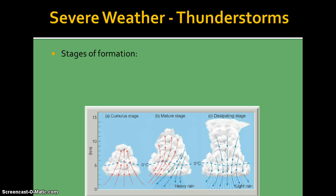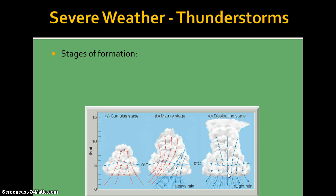Now the next thing we're going to look at are thunderstorms. There are three stages. First, you have warm moist air that rises and starts forming cumulus clouds — the big fluffy white clouds you usually see on fair days. As the day goes on and you have more evaporation, your clouds are going to become taller in height. We call these vertical clouds. This is the mature stage, producing cumulonimbus clouds where you start to have heavy rains. Heavy rains slow down the updrafts, followed by light rain in what is called the dissipating stage.